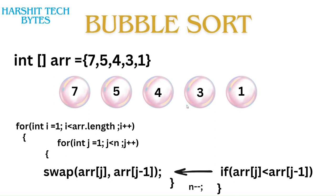Hello everyone, welcome back to our channel. My name is Harsiv and in today's video we will be seeing how to perform bubble sort. Bubble sort is a very straightforward algorithm in which we compare adjacent elements and if they are in the wrong order then we swap them. I will be using two for loops — one outer and one inner, both nested.